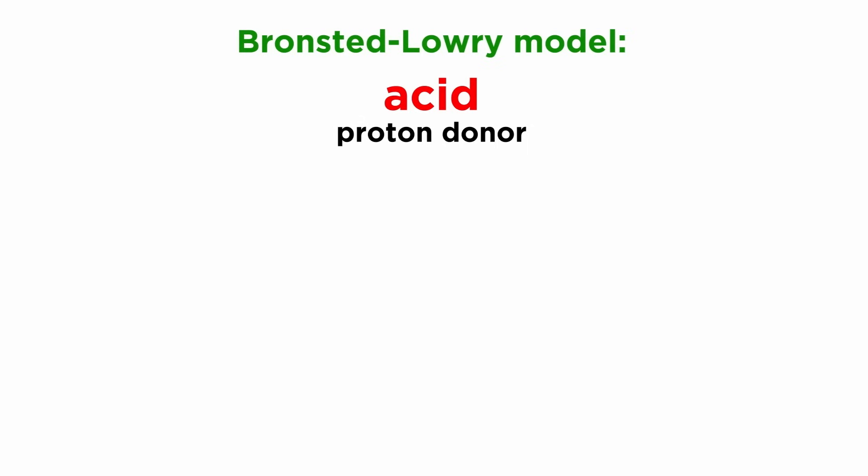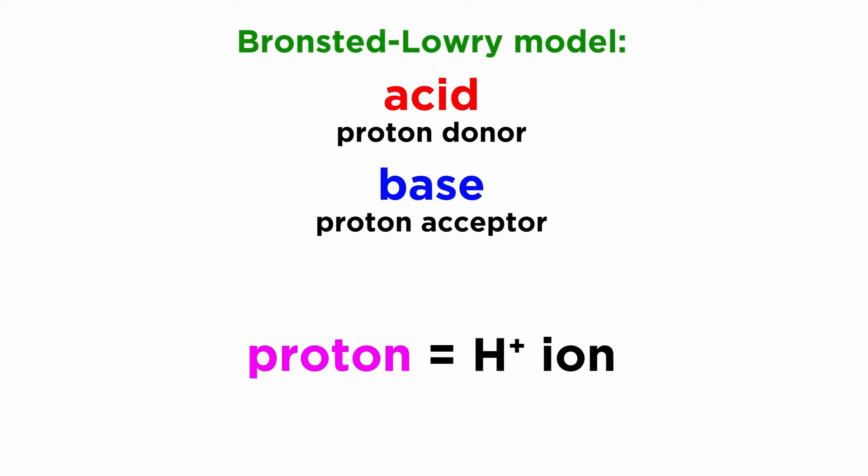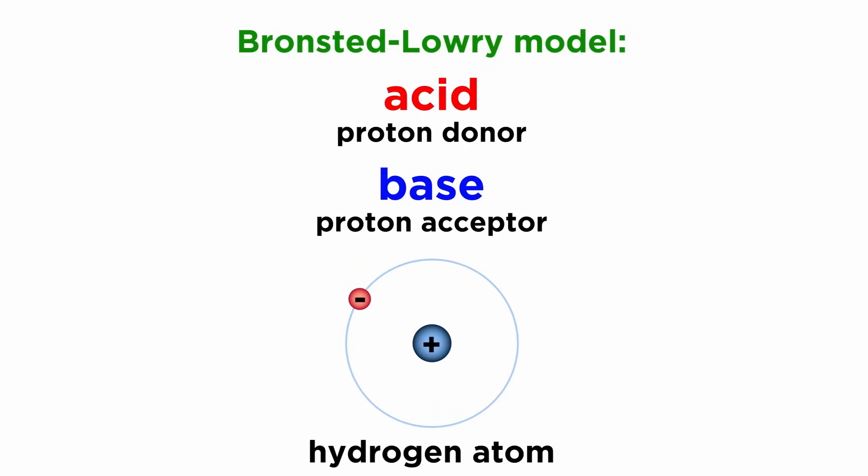This model describes an acid as something that donates a proton, and a base as something that accepts a proton. When we say proton, what we are referring to is a positively charged hydrogen ion. Since a typical hydrogen atom consists of simply one proton and one electron.